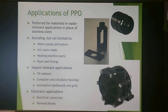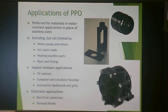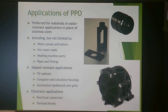All of the shown applications feature black PPO, since no organic colorant can withstand its processing temperatures. PPO is preferred for water-resistant applications in place of stainless steel — things like water pumps and meters, hot water tanks, washing machine parts, and pipes and fittings. It's also used in impact-resistant applications such as TV cabinets, computer and calculator housings, automotive dashboards, and grills, as well as electronic applications like electrical connectors and terminal blocks.